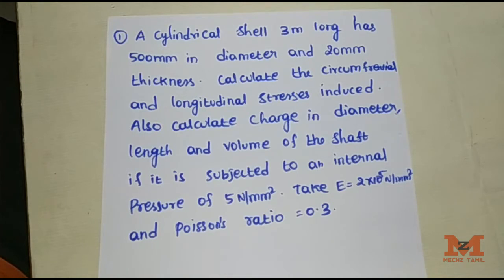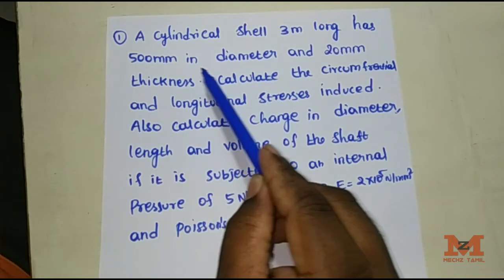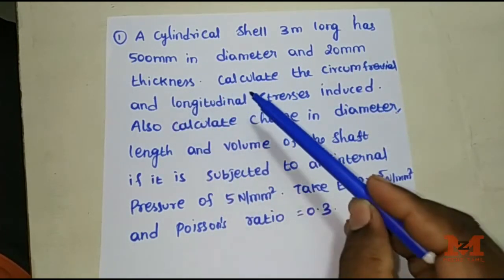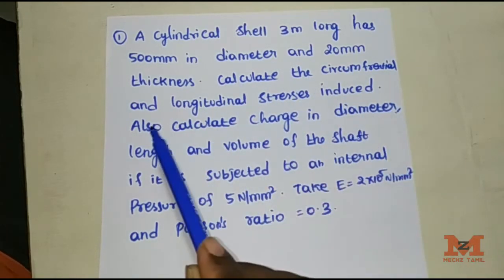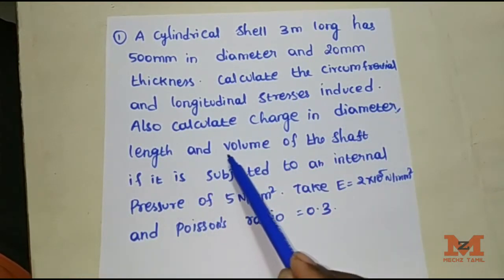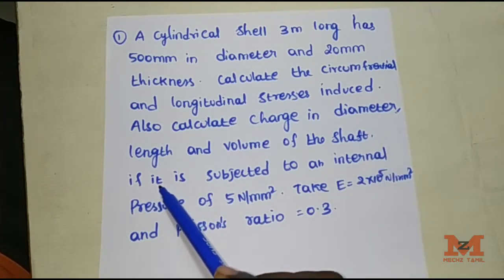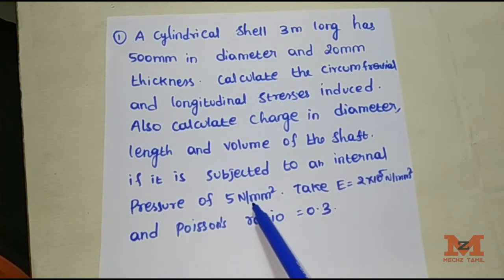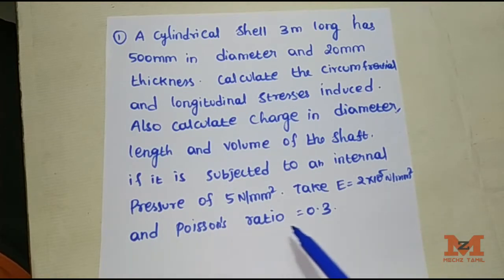A cylindrical shell is 3m long, has 500mm diameter and 20mm wall thickness. Calculate the circumferential and longitudinal stresses induced. Also calculate the change in diameter, length and volume of the shell, if it is subjected to an internal pressure of 5 N/mm². Take E equal to 2×10⁵ N/mm² and Poisson's ratio equal to 0.3.